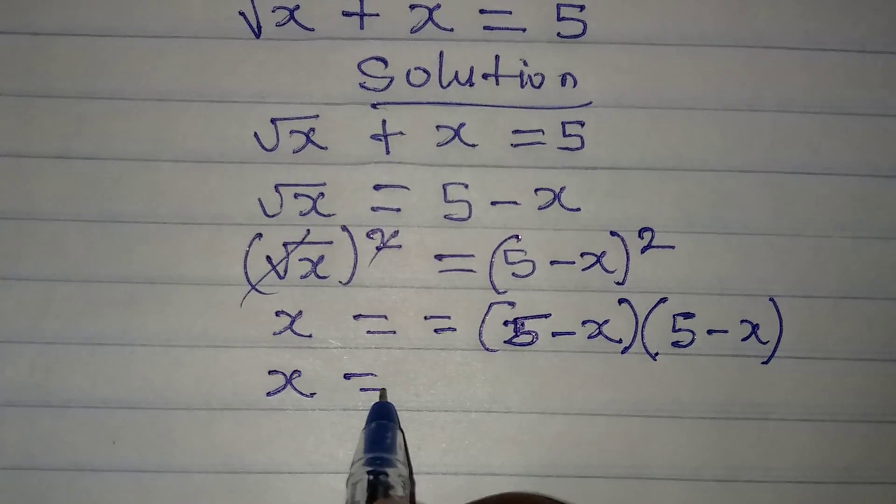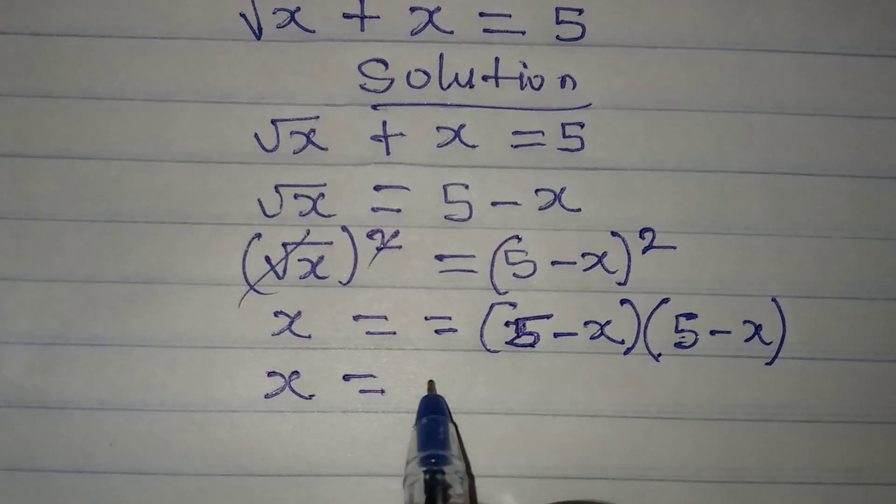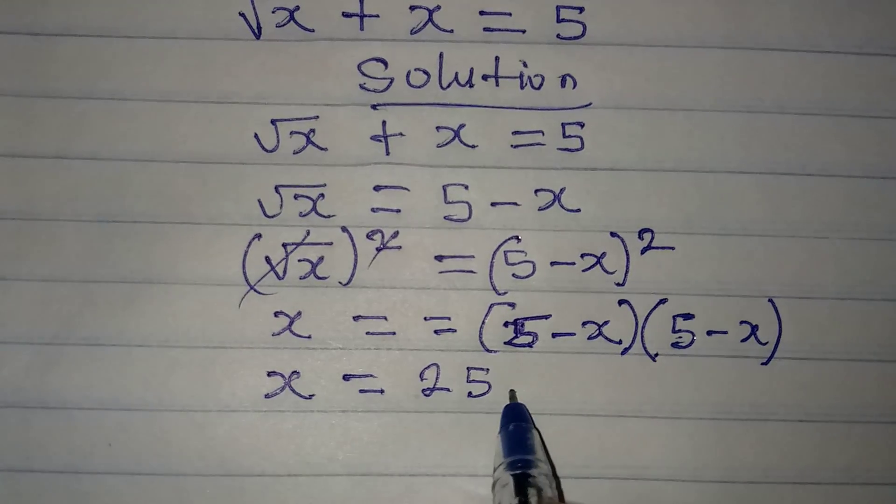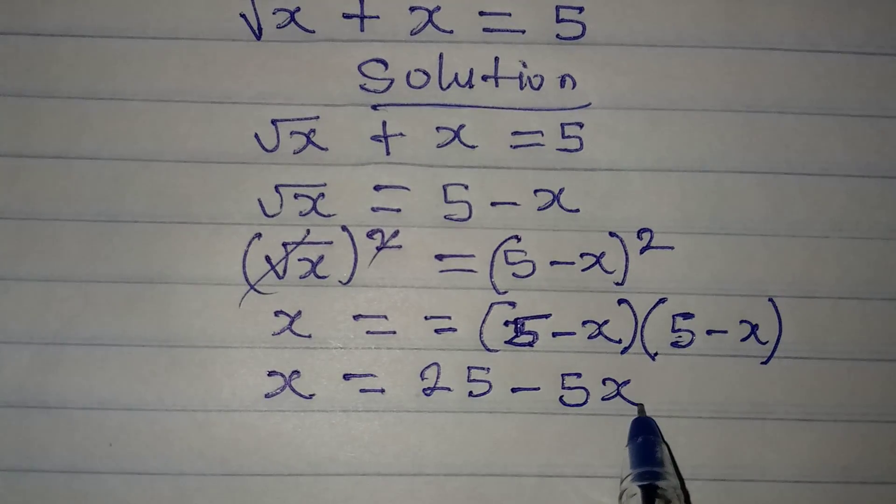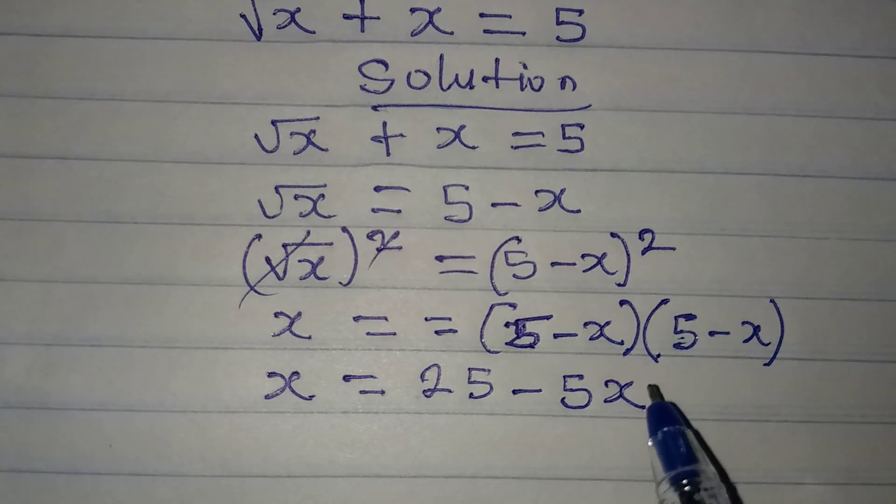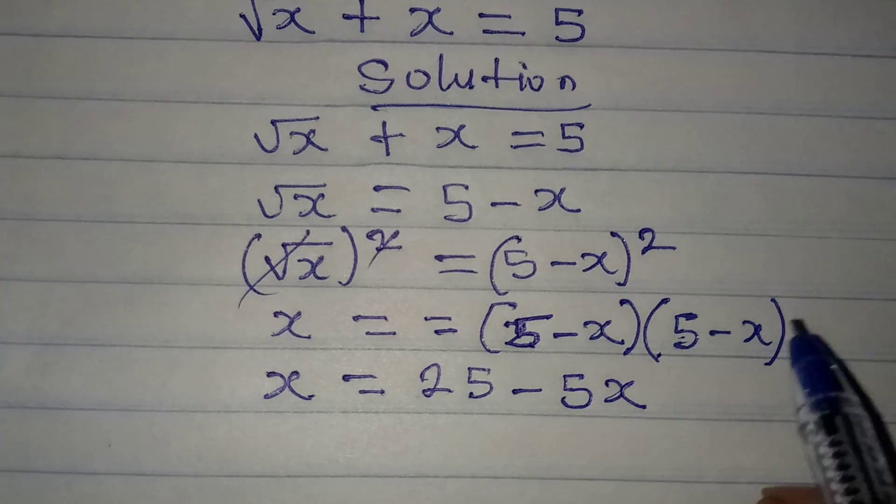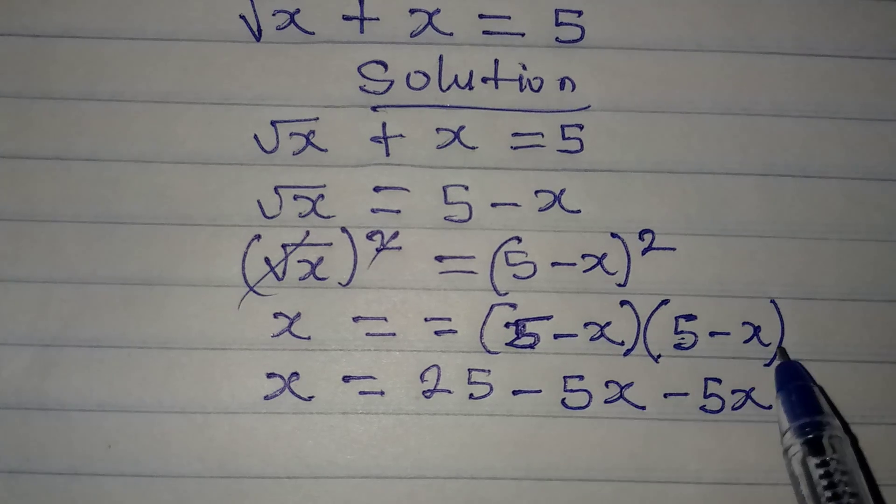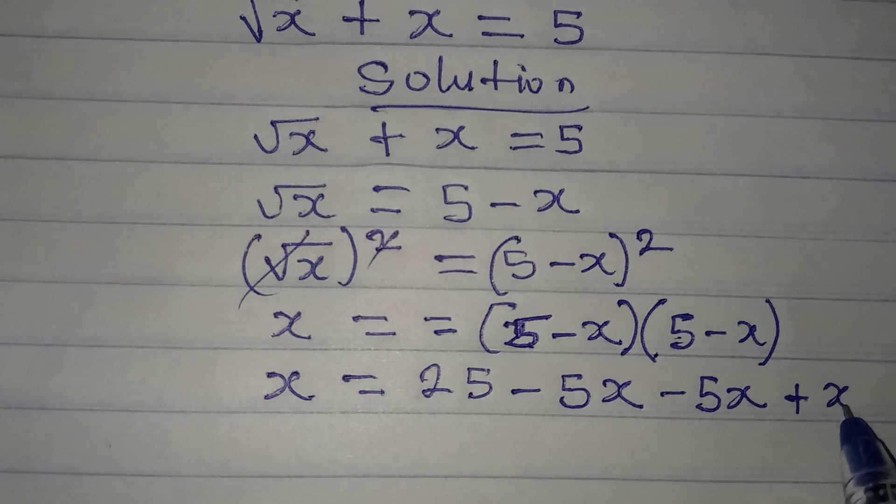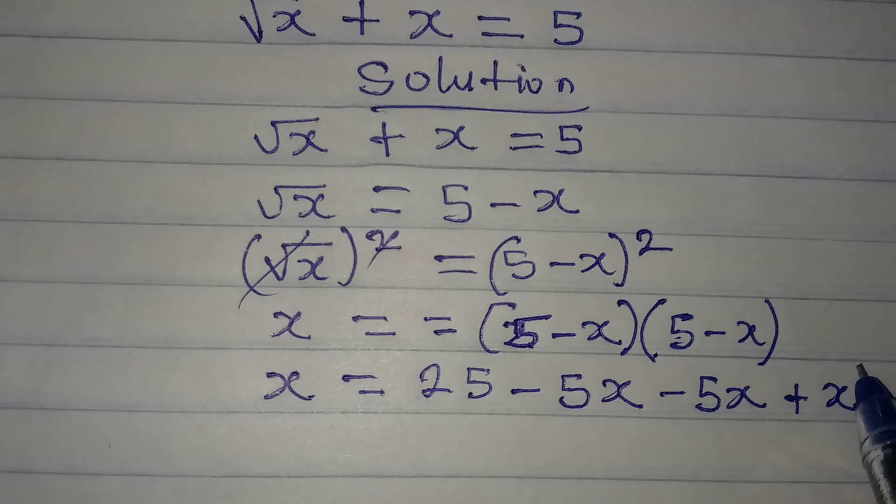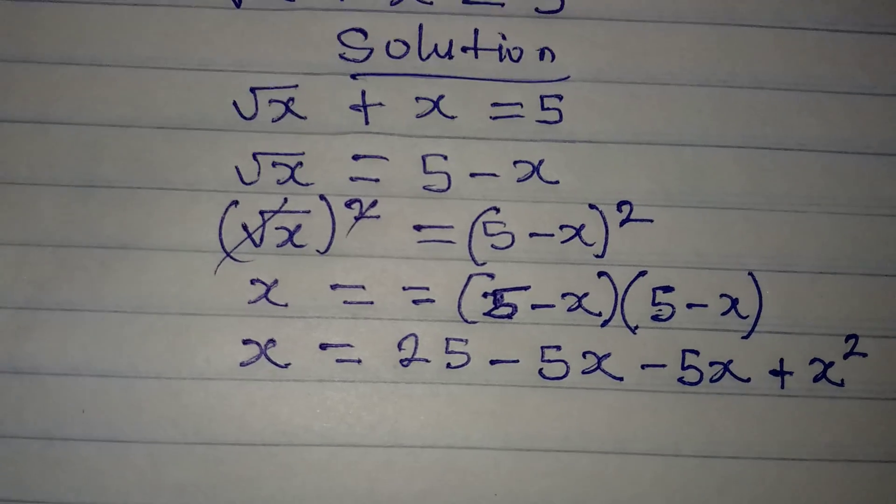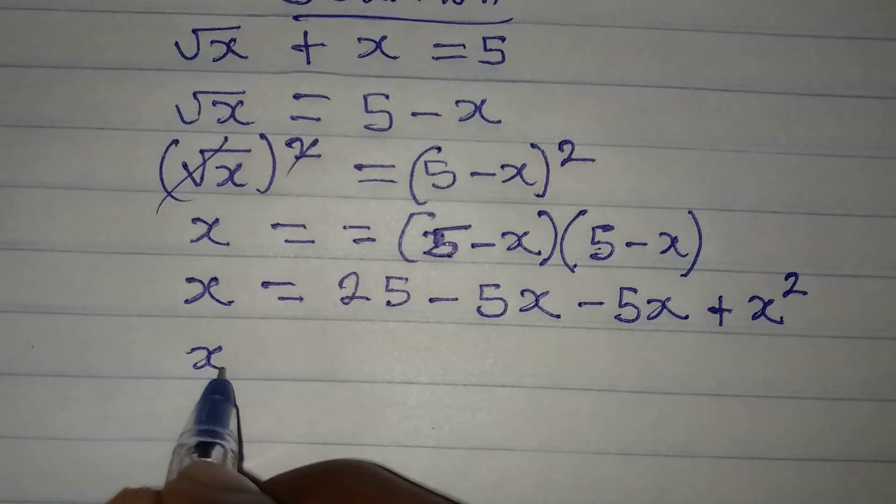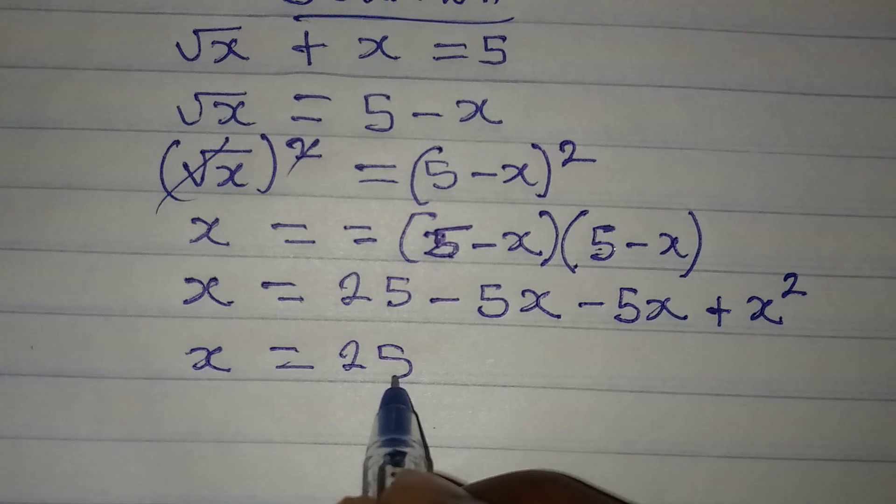x here is equal to 5 times 5 is 25, then 5 times minus x is minus 5x, then minus x times 5 will give minus 5x, minus x times minus x will give plus x squared. So this is what we have. Let me take a step further. x will be equal to 25 minus 10x plus x squared.